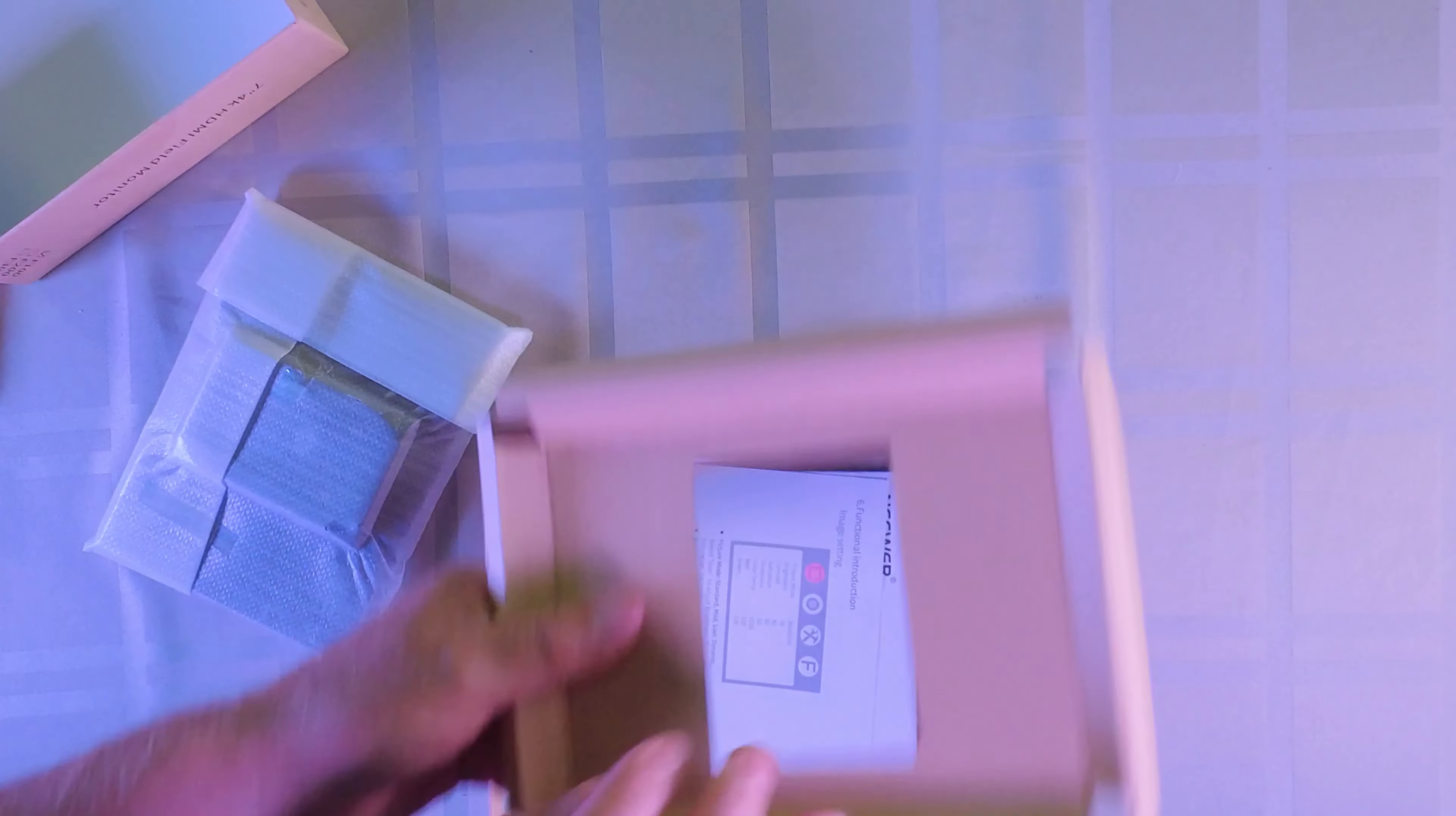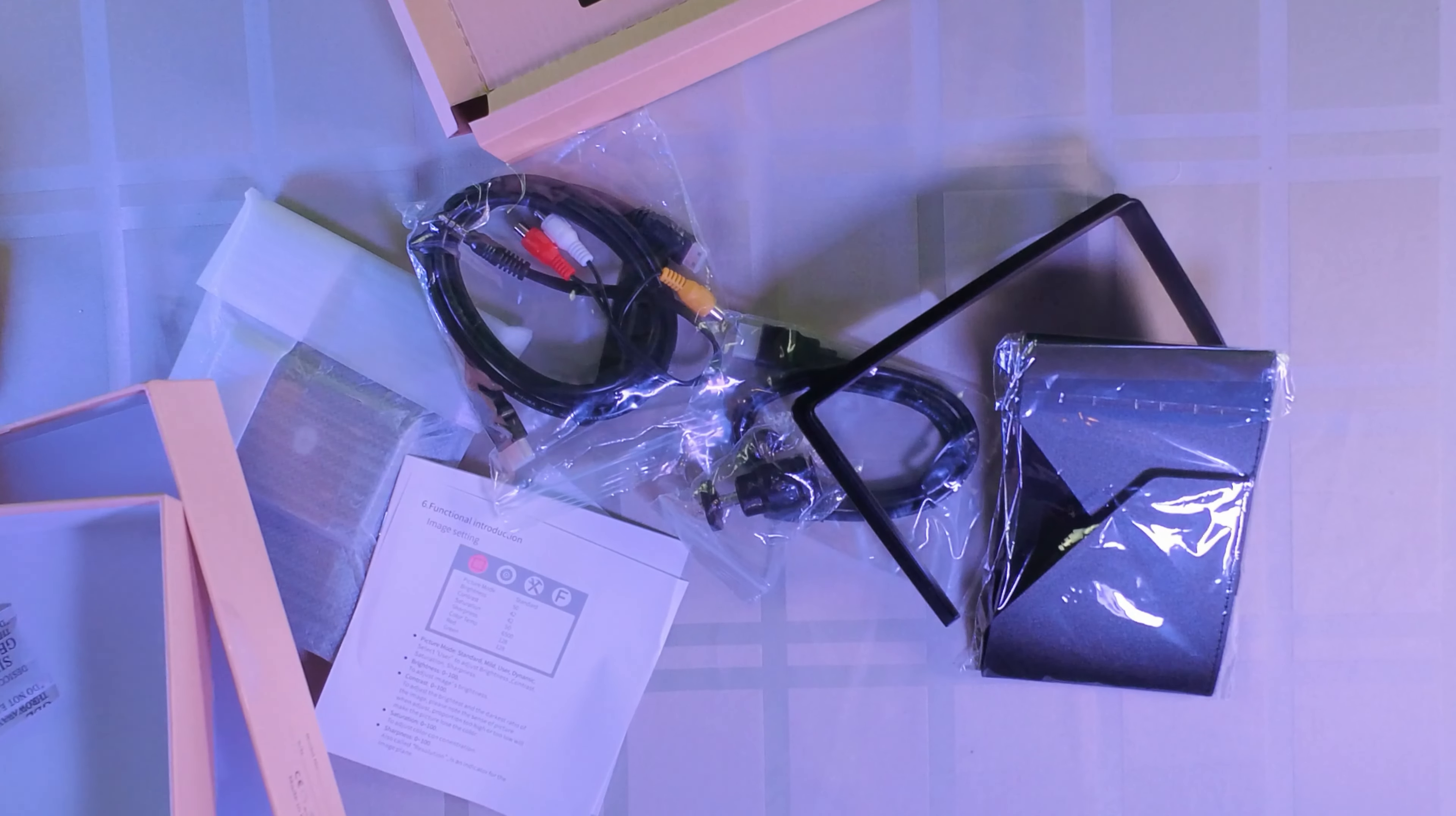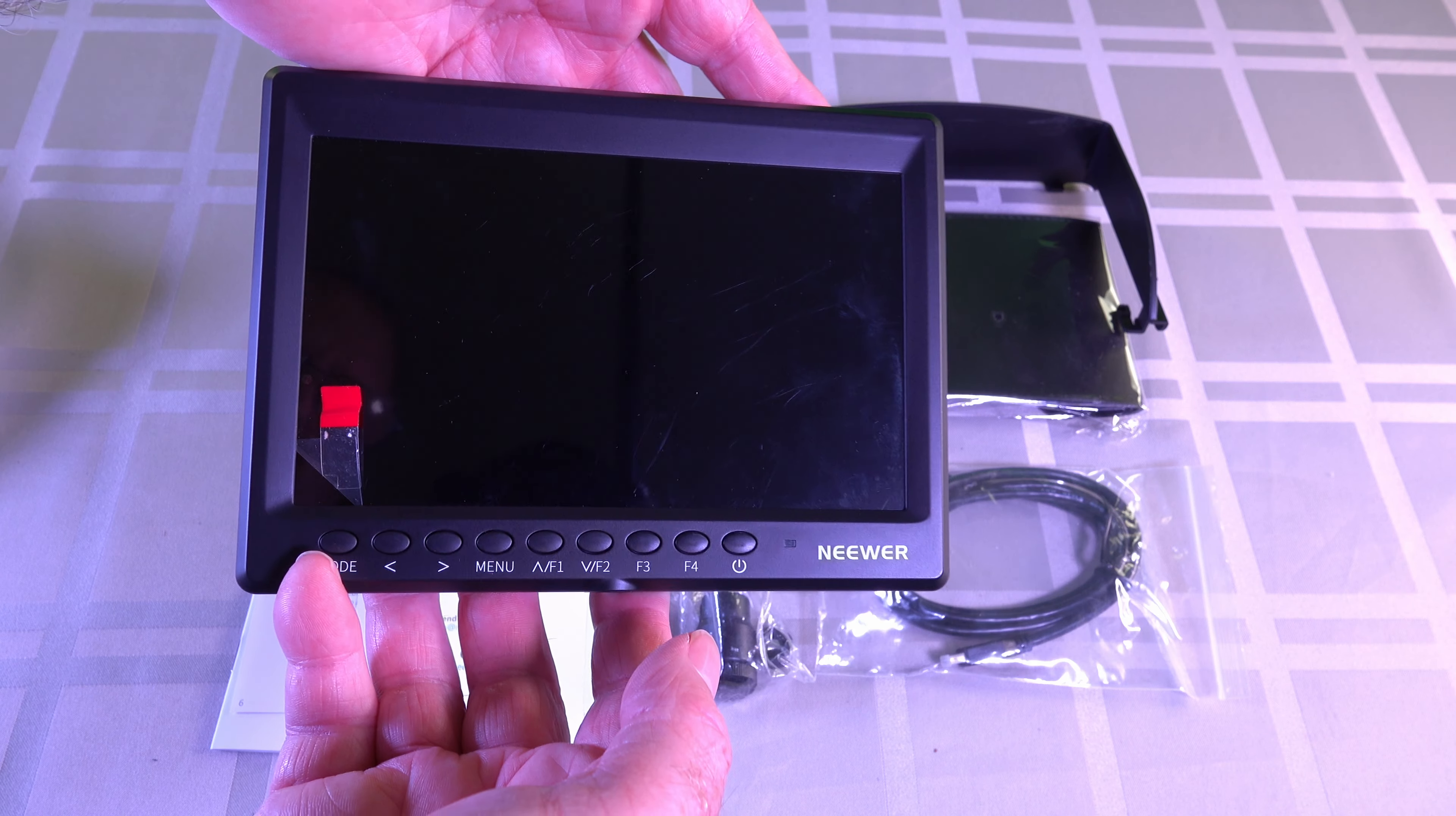Let's have a look. I've got what looks like the screen, we'll have a look at that in a second. We've got some instructions, bits and pieces, little mount, sunshade, and of course my favorite silica gel. We'll put all this aside. This is the main part in the actual box. I seem to be getting a lot of Neewer products lately. I've been quite impressed with Neewer in general, they're pretty impressive.